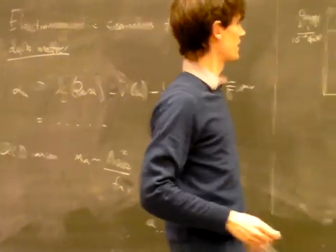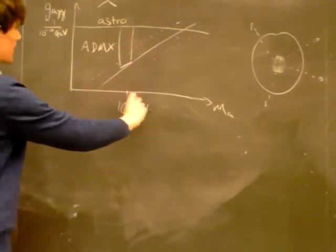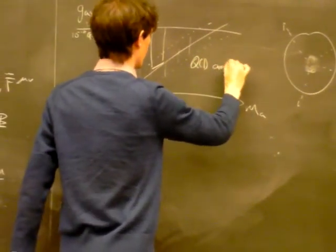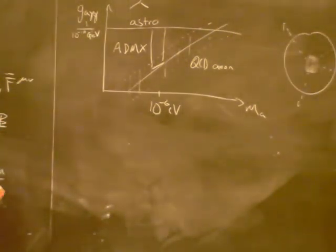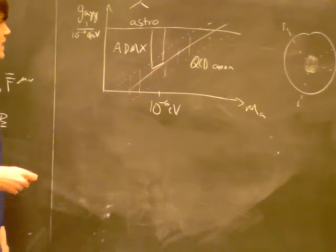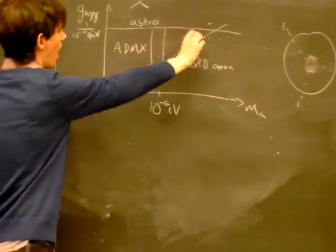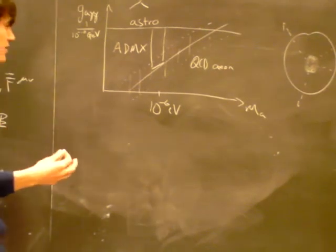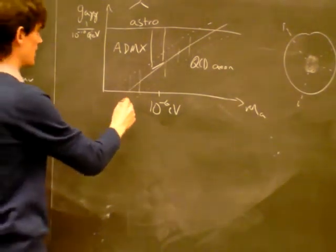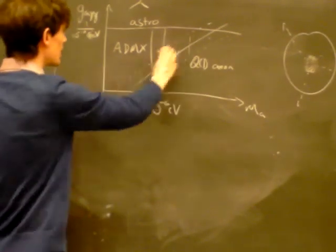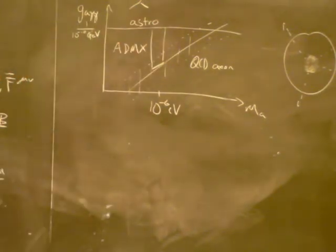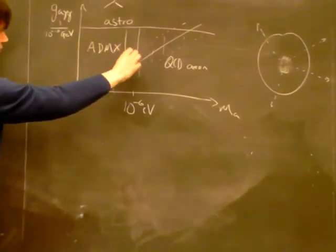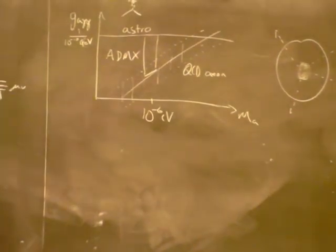This is basically the parameter space we're interested in. The QCD axion provides a definite target, but the whole parameter space is interesting. Even for the QCD axion, there's no real way of saying exactly what mass it should be — changing the formation mechanism or initial conditions changes where you sit along the parameter space. There's a large range of parameter space to cover, and we're starting to probe it experimentally in one range.